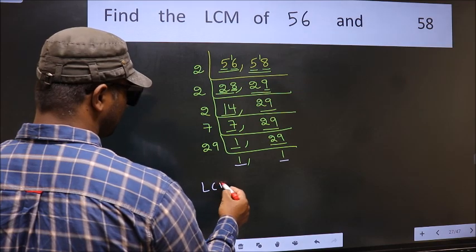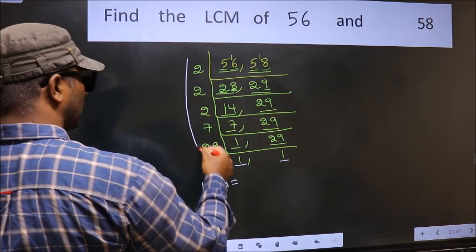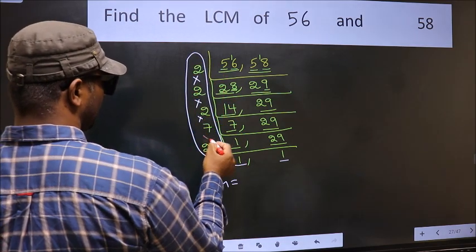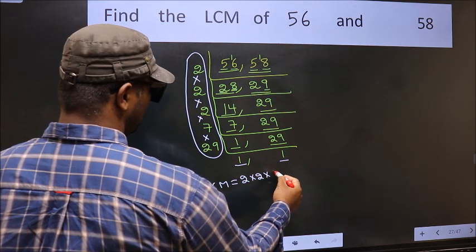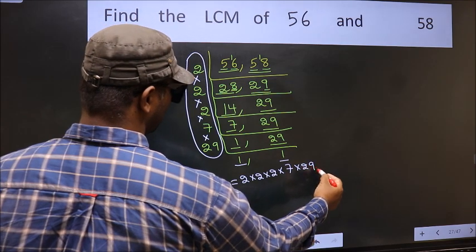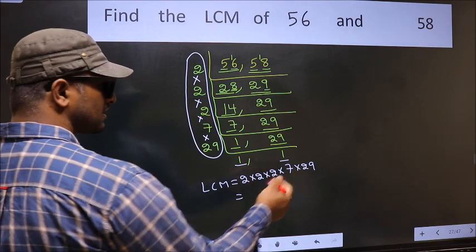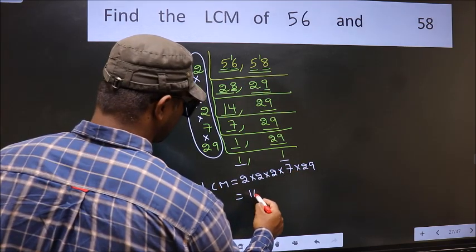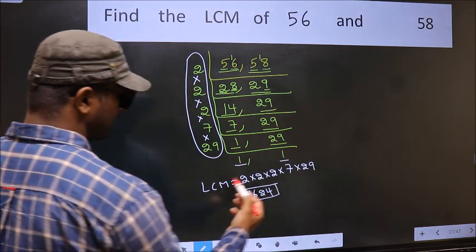So our LCM is the product of these numbers. That is 2 into 2 into 2 into 2 into 7 into 29. When we multiply these numbers, we get 1624, which is our LCM.